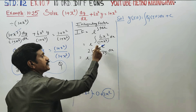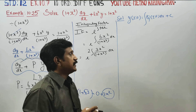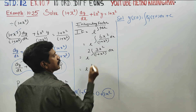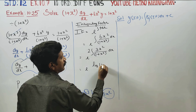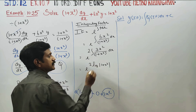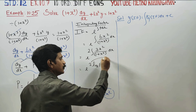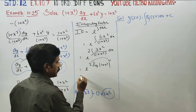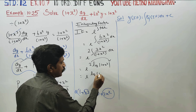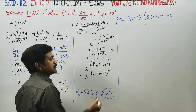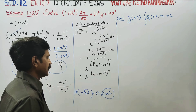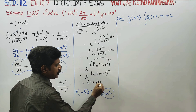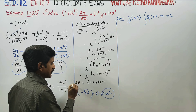To evaluate this integral, differentiate the denominator — the denominator differentiates to give the numerator. This uses the logarithm formula: the integral of f'(x)/f(x) dx equals log f(x). This is the logarithm power rule.